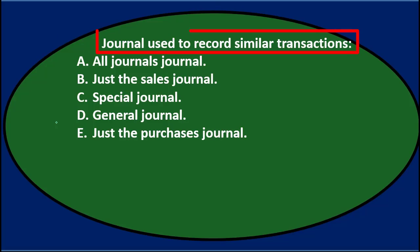Next question: Journal used to record similar transactions. A. All journals journal. B. Just the sales journal. C. Special journal. D. General journal. E. Just the purchases journal.